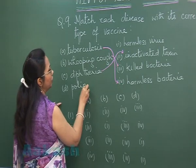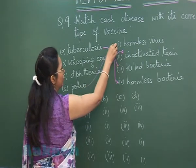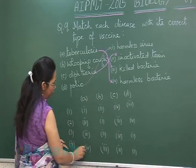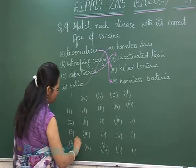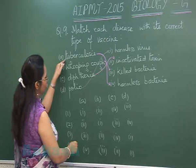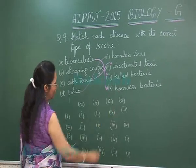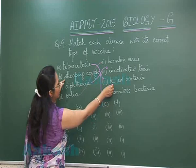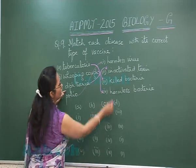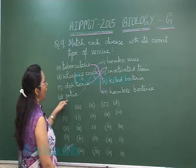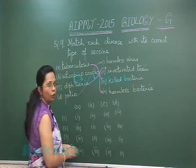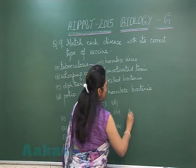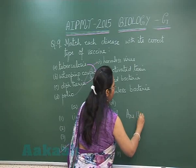Polio uses an attenuated viral vaccine. So the best choice is the 4th: tuberculosis with harmless bacteria, whooping cough with killed bacteria, diphtheria with inactivated toxin, and polio with harmless virus. So our answer is 4th.